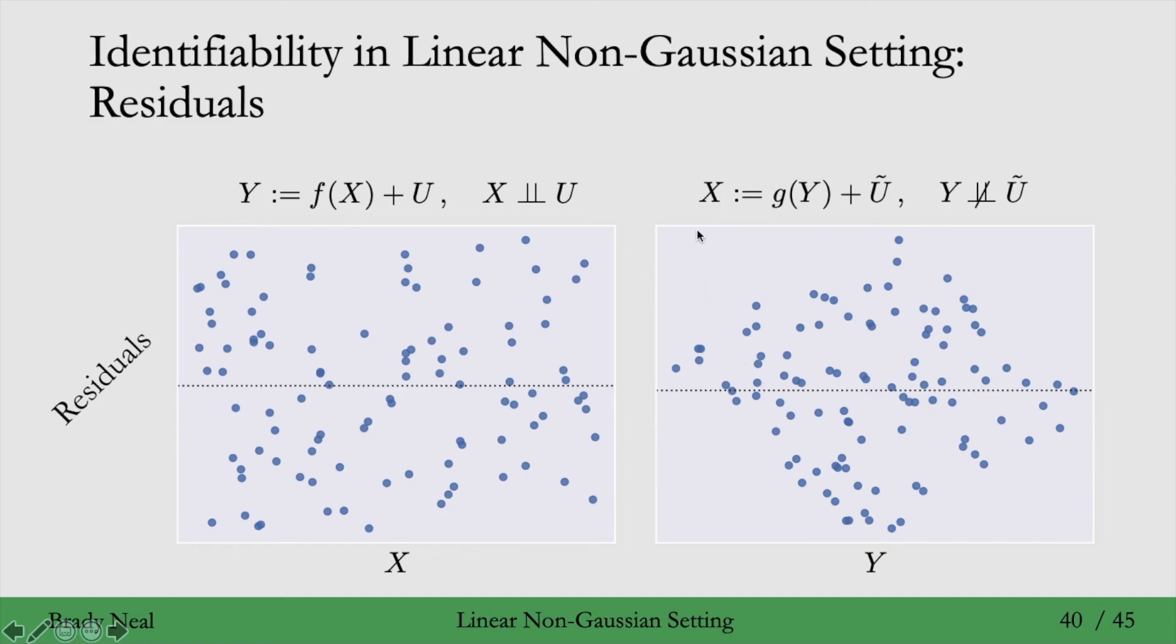But then here, this distribution of Ũ is pretty thin here when we condition on values of Y over here, it's a bit wider as we condition on values of Y over here, the distribution is getting wider, and then it thins out again. So clearly, the support is changing as we change Y. So Ũ absolutely depends on Y.